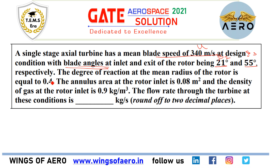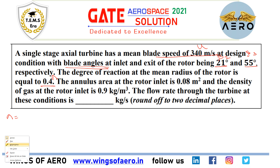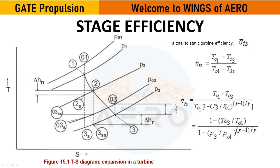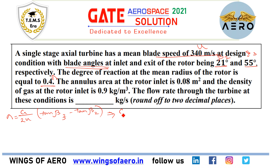The degree of reaction at the mean radius of the rotor is given. The formula for degree of reaction is Ca divided by 2U, multiplied by (tan β3 minus tan β2). Now you know beta 2, you know beta 3, you know U, and you know the degree of reaction. So from here you can find Ca.